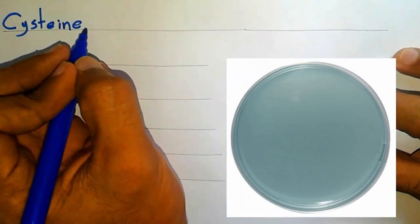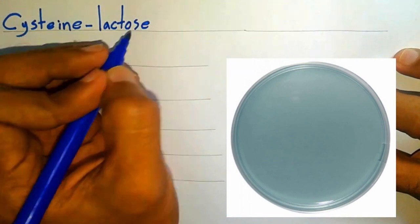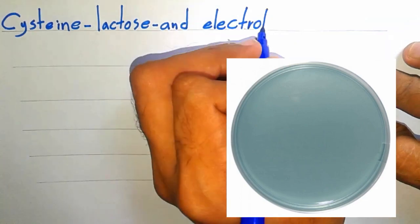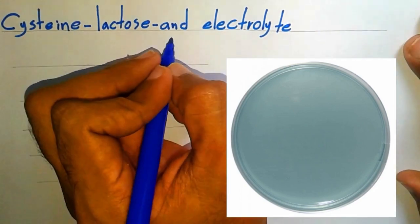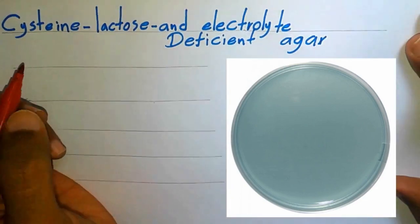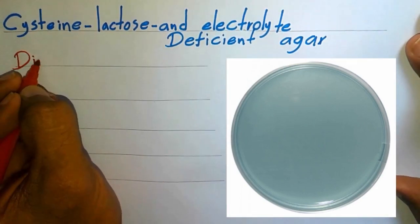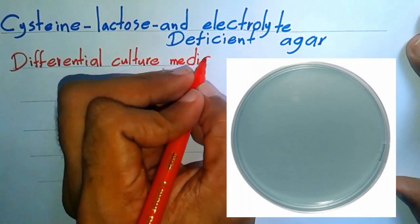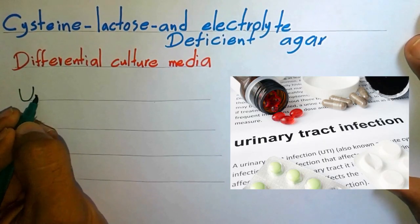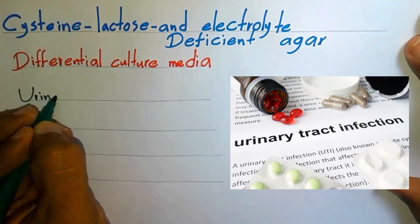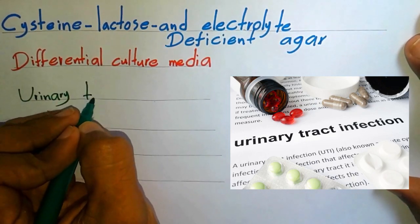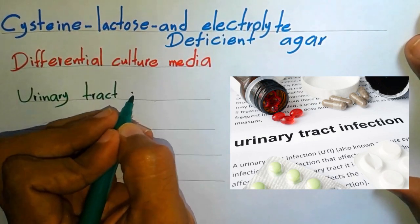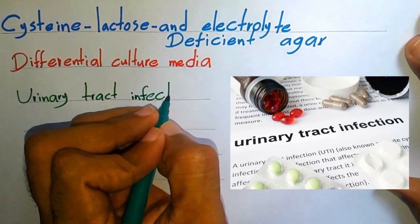CLED stands for Cystine Lactose Electrolyte Deficient agar. CLED agar is a differential culture media. This media is used to identify possible pathogens that cause urinary tract infections.